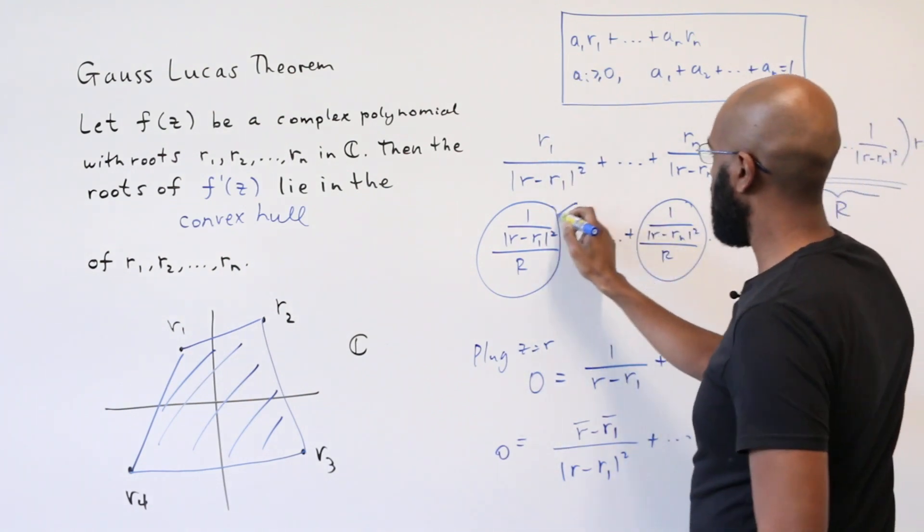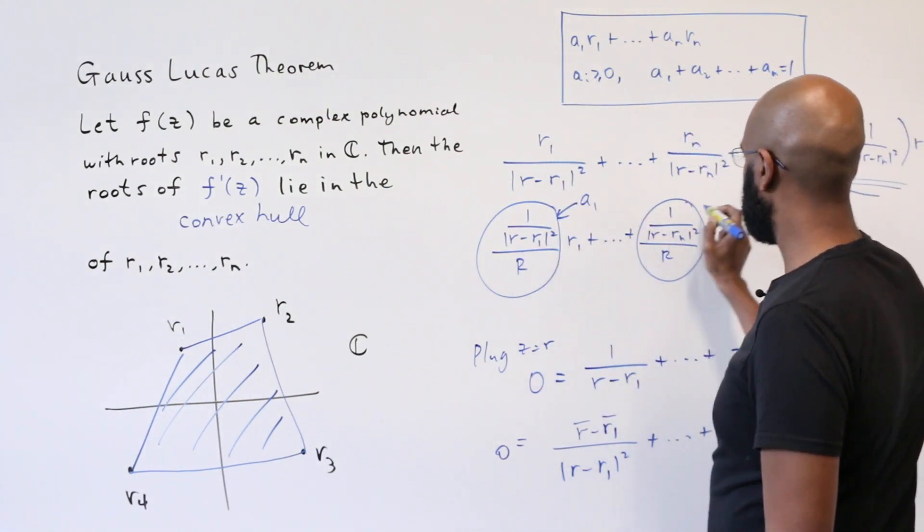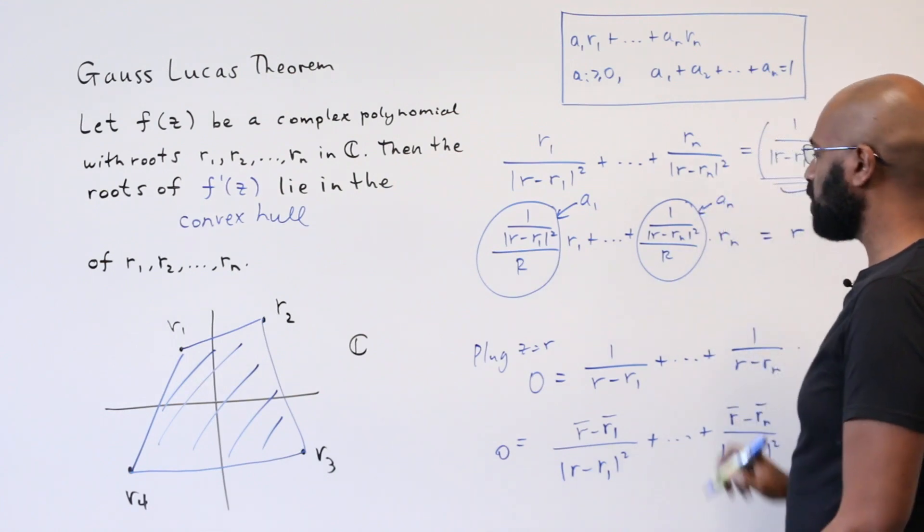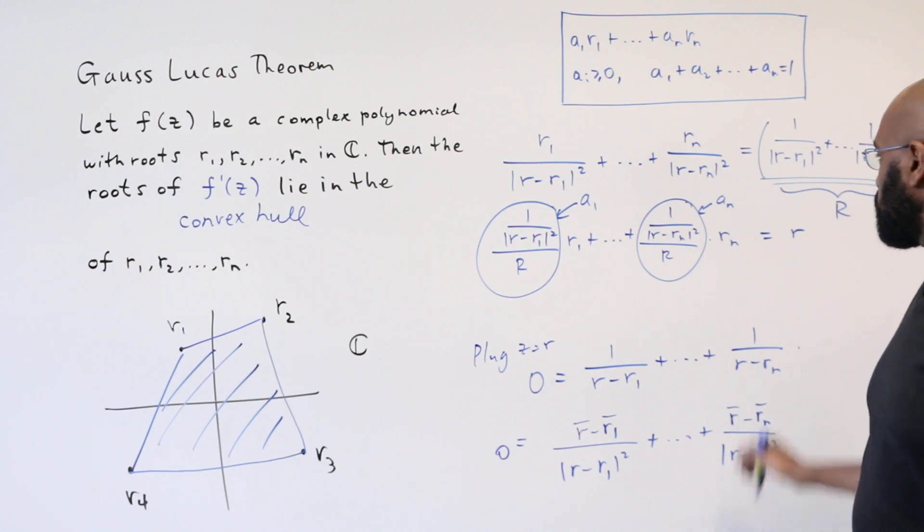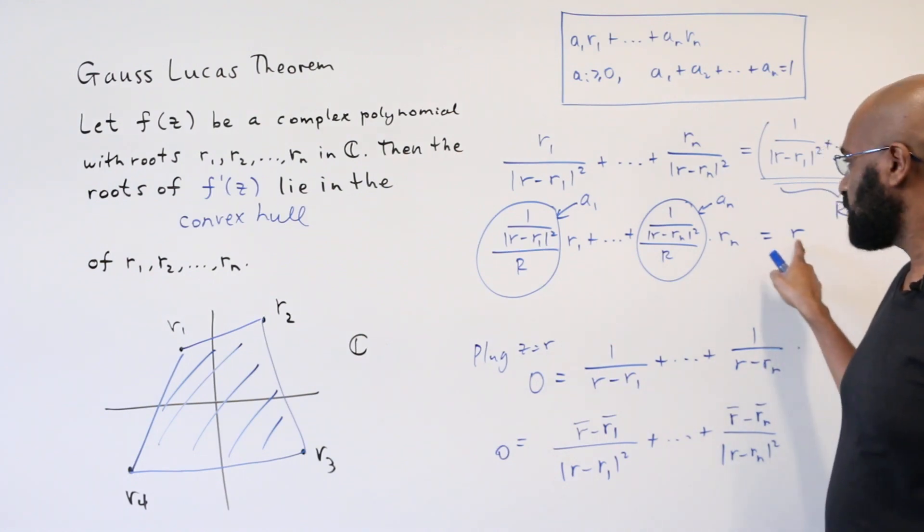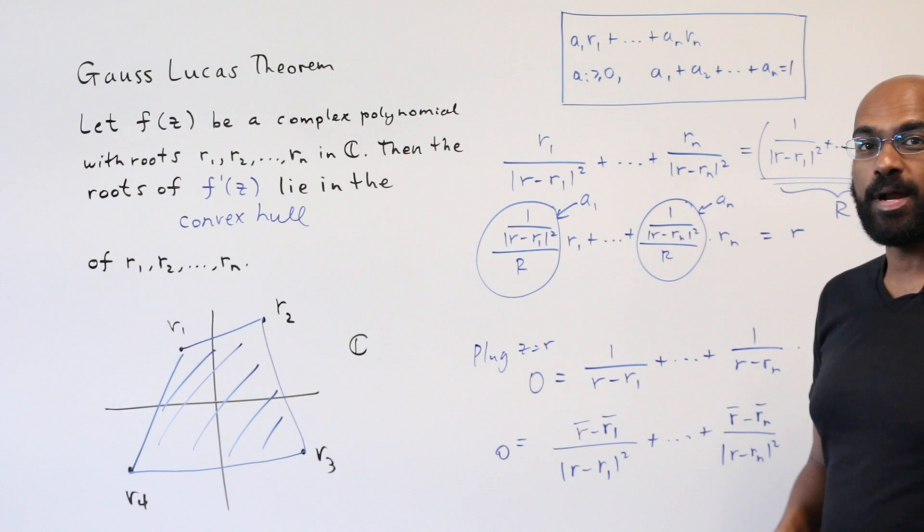If we let ai be these scalars, like a1 is this and an is this, they're all non-negative, and their sum is 1. And so r then has to lie in the convex hull of r1 through rn.